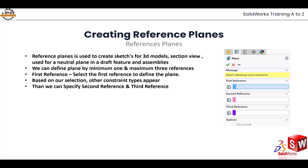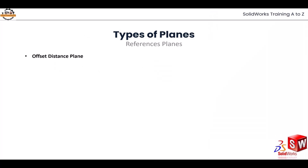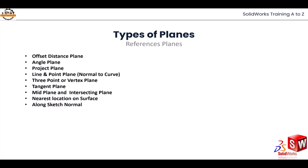Let's see all the different types of planes we have. We are going to learn: offset distance plane, angle plane, project plane, line and point plane (normal to curve), three point or vertex plane, tangent plane, mid plane and intersecting plane, nearest location on surface, along sketch normal, coincident plane, and parallel and perpendicular plane.